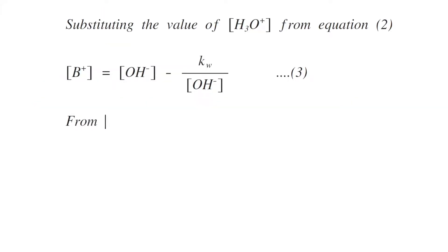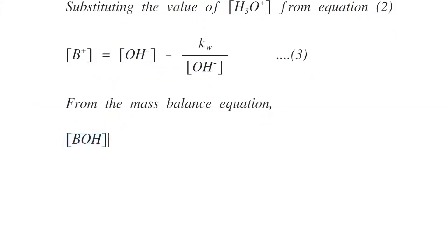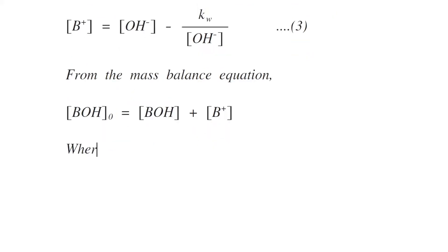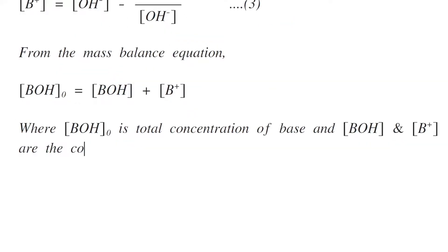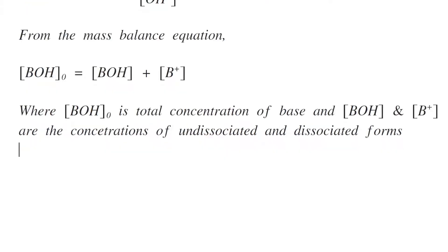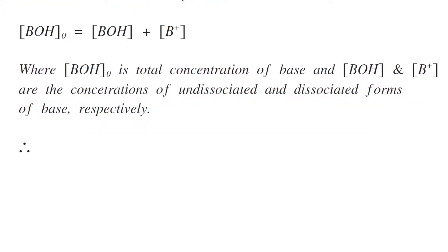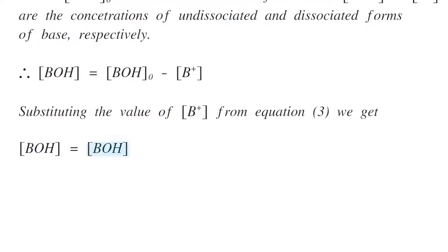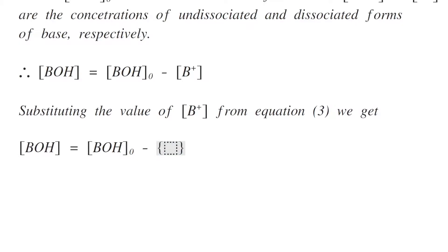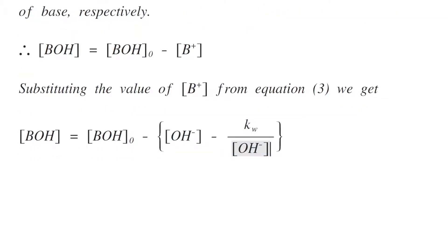From the mass balance equation, [BOH]₀ equals [BOH] + [B⁺], where [BOH]₀ is the total concentration of the base, and [BOH] and [B⁺] are the concentrations of the undissociated and dissociated forms respectively. Substituting [B⁺] from equation three, we get [BOH] equals [BOH]₀ minus [OH⁻] minus Kw/[OH⁻]. This is equation number four.